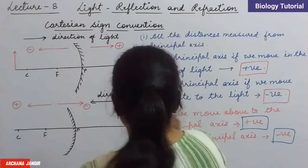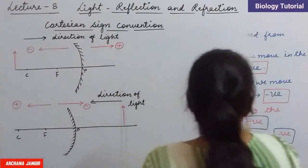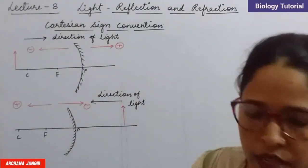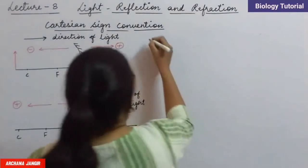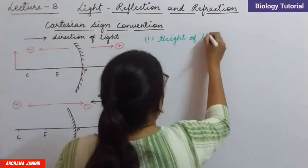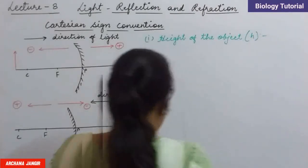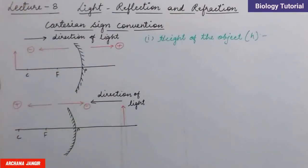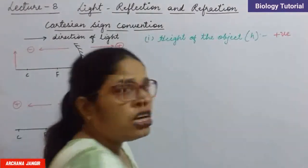Now we have to look at all the things we have to study — object height positive or negative, image height positive or negative. So the first one is height of the object, denoted by h. Object ki height — since the object is above the principal axis, its value is positive. Object ki height positive me aegi.